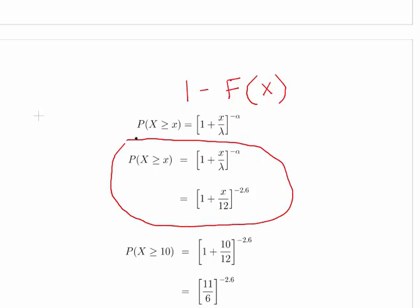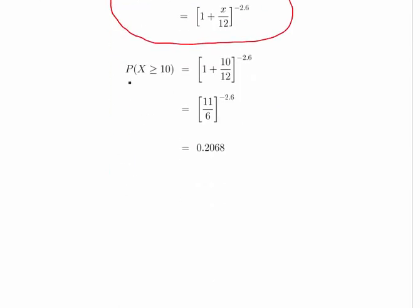We're asked for the value of X greater than 10, which is 1 plus 10 over 12 to the power of minus 2.6. That's 11 over 6 to the power of minus 2.6, which equals 0.2068, or 20.68 percent. So that's it. We'll leave it there.